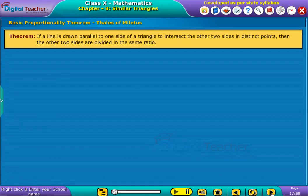Basic proportionality theorem states that if a line is drawn parallel to one side of a triangle to intersect the other two sides in distinct points, then the other two sides are divided in the same ratio.